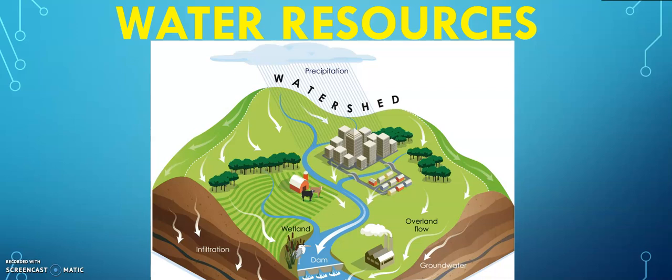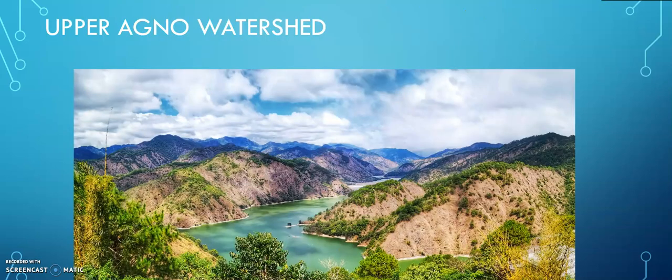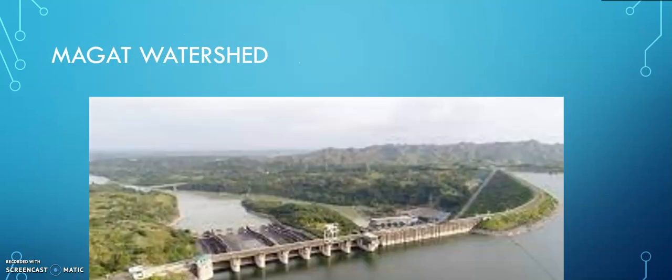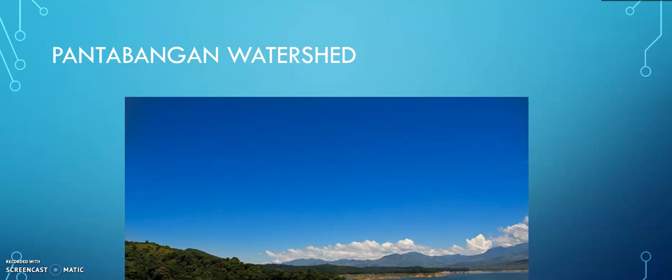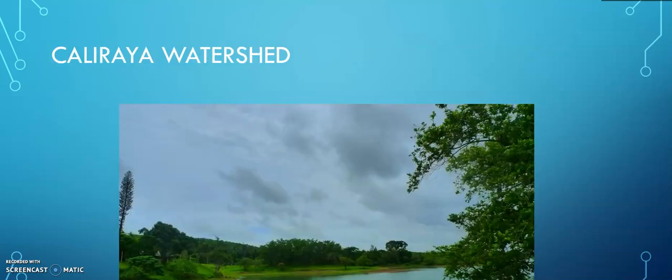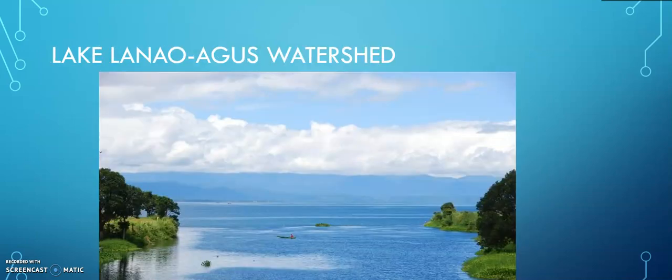We have some common watersheds in the Philippines. We have the Upper Agno watershed, San Roque watershed, Makiling Banaka watershed, Maldot watershed, and Pantambangan watershed — known as the second largest watershed in Asia. We also have Kaliraya watershed, and Lake Lanao Agos watershed, which is common to Lanao del Sur and Lanao del Norte.